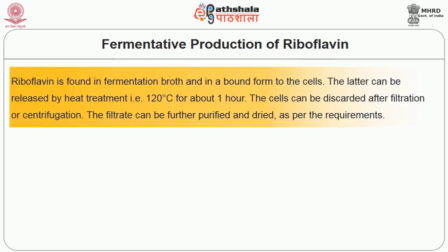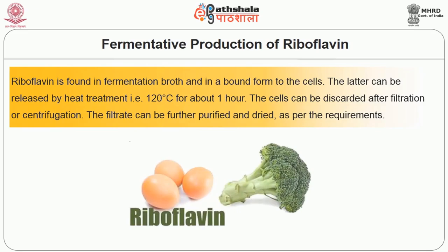The last and important step in the production is recovery. Riboflavin is found in fermentation broth and in a bound form to the cells. The latter can be released by heat treatment at 120 degrees centigrade for about one hour. The cells can be discarded after filtration or centrifugation, and the filtrate can be further purified and dried as per requirements.